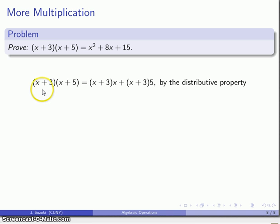So we might use the distributive property. We do have the distributive property in general. So this x plus 3 times x plus 5, well I can distribute this product. This is x plus 3 times x, x plus 3 times 5 by the distributive property.